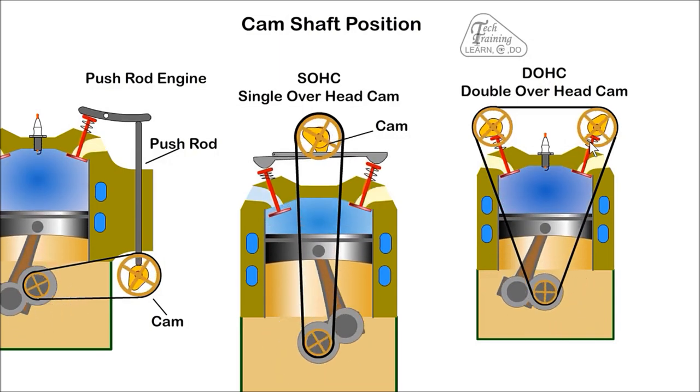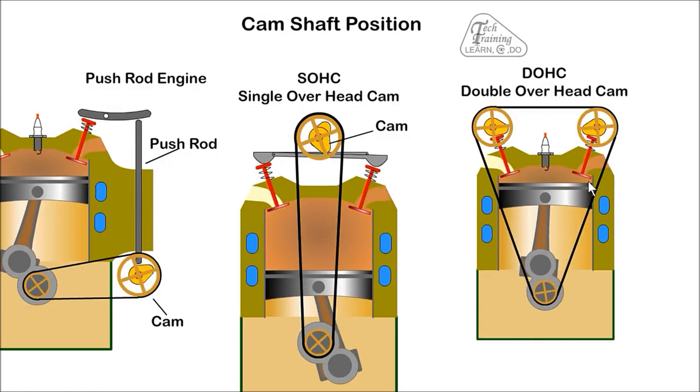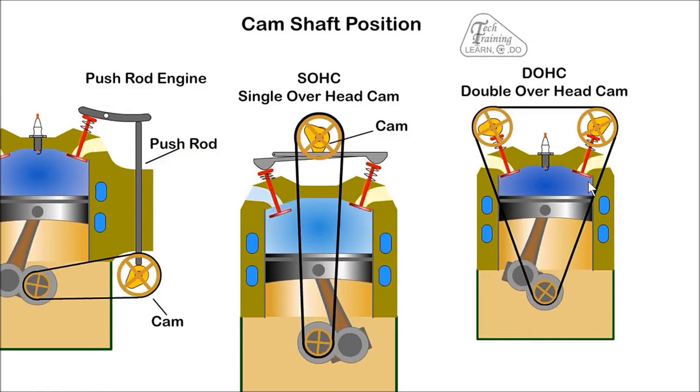With a non-interference engine, the valves do not extend into the path of the piston. If the timing belt breaks, it will not result in damaged valves.